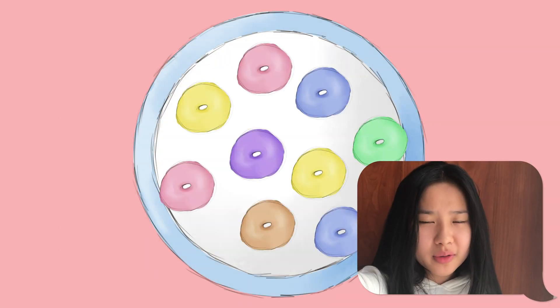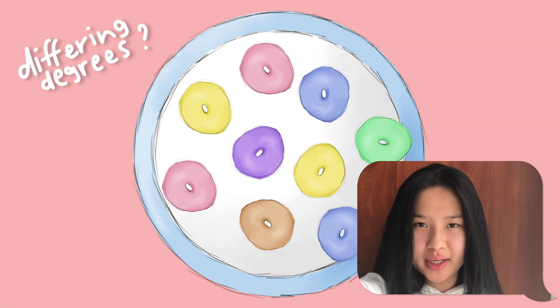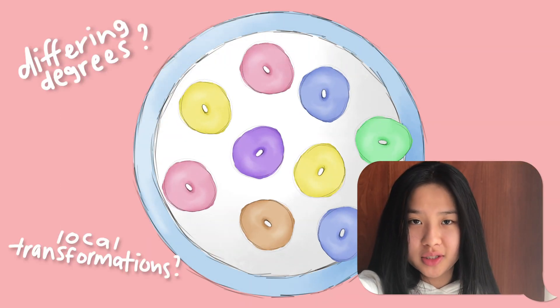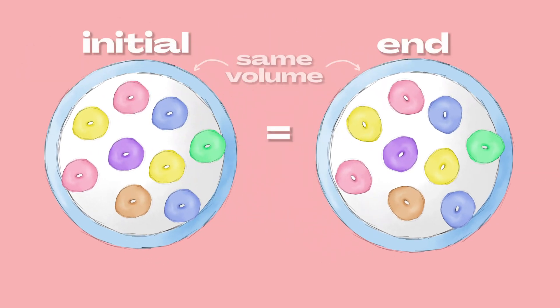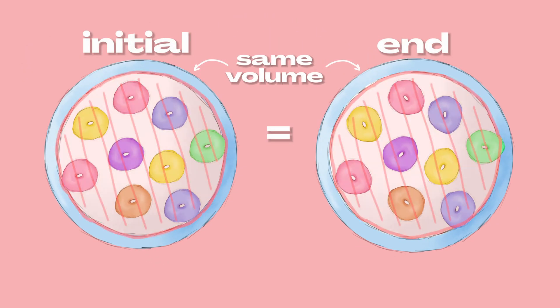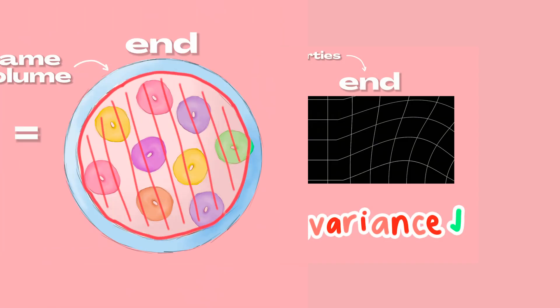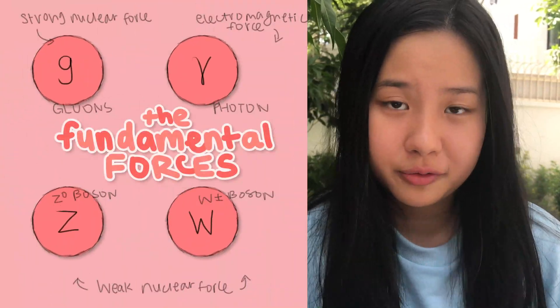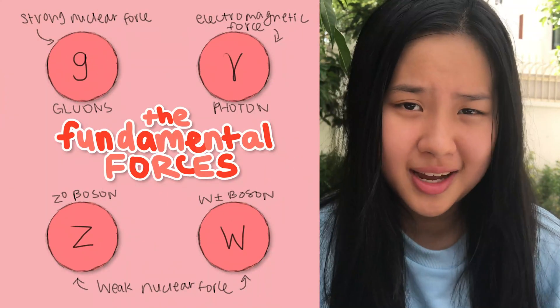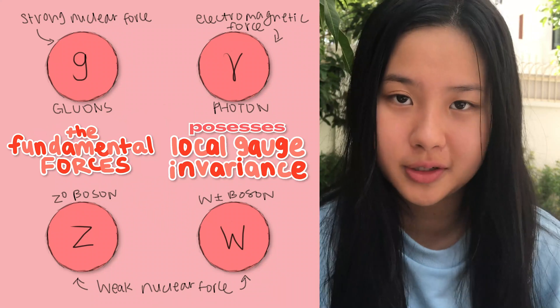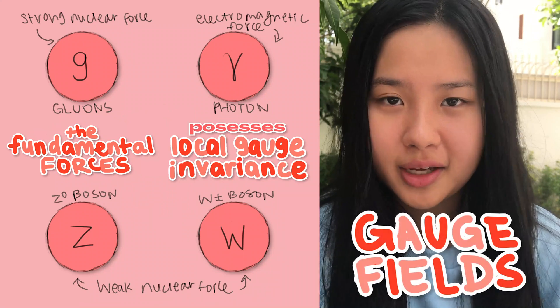What if we rotated the cereal by different degrees, making local transformations instead? Well, like before, the total volume is left unchanged, and as we defined previously, since our system remained conserved after making local transformations, it possesses local gauge invariance. Here's the thing: the fundamental forces actually contain the property of local gauge invariance, making them gauge fields.